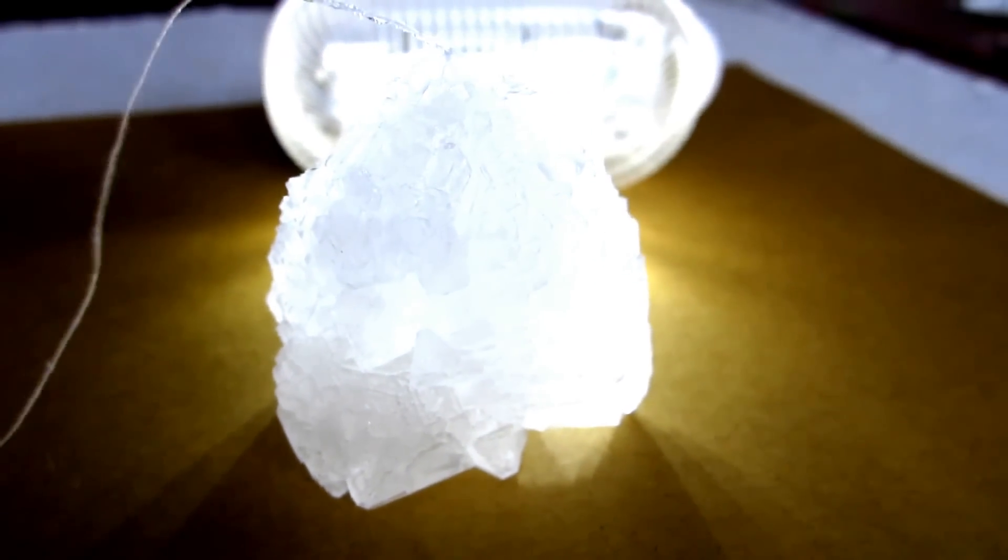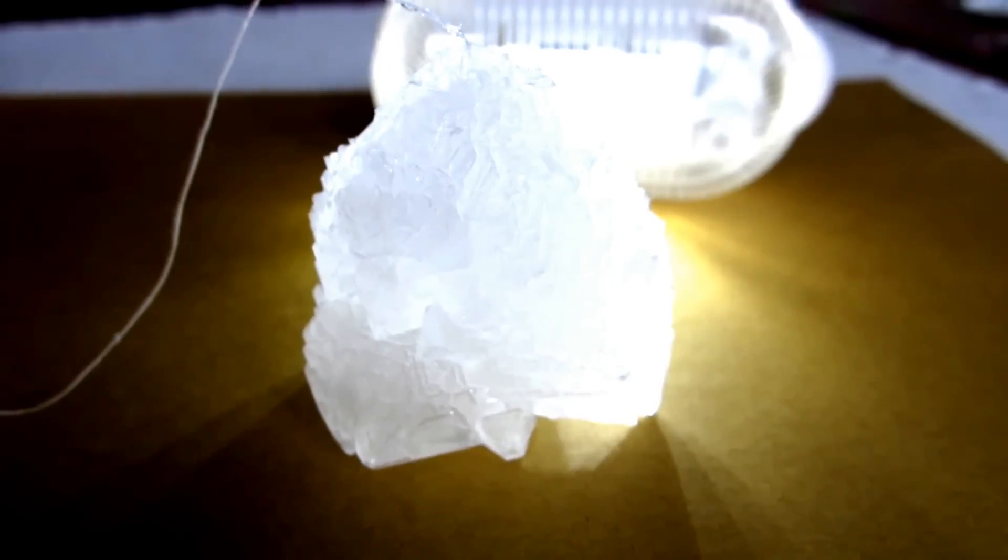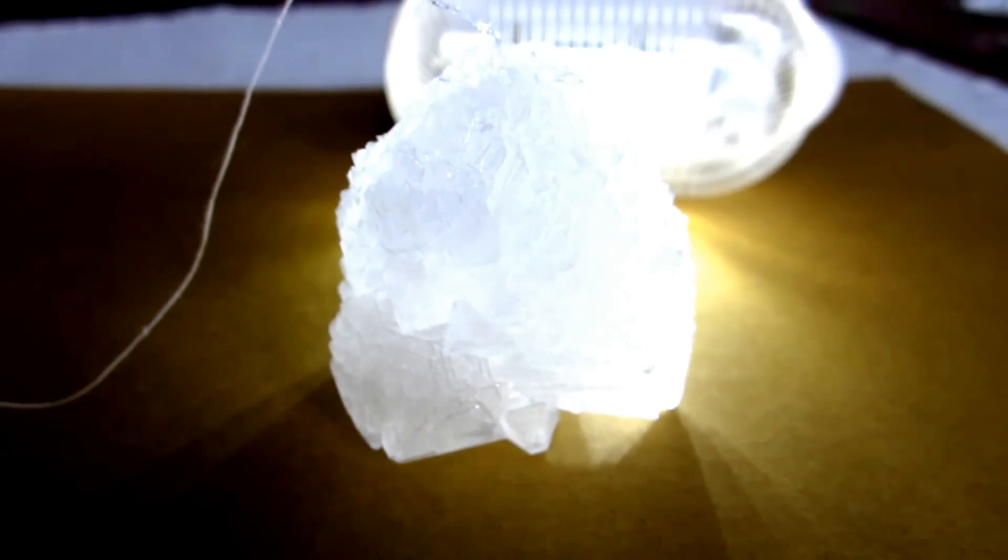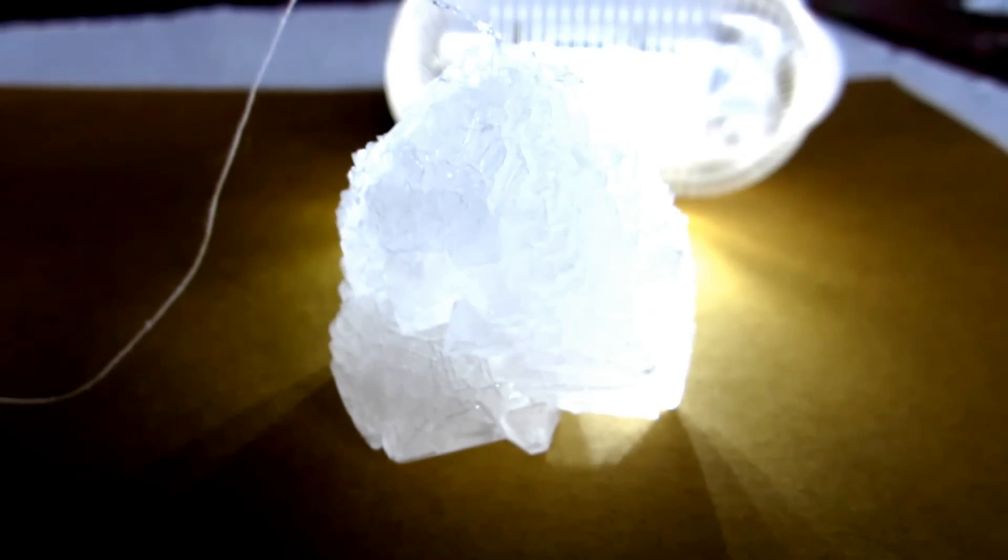To make a larger crystal, you can use this as seed crystal and heat the solution again to allow all alum to dissolve. Repeat the steps we did and you can have a super large crystal. Try this at home and thanks for watching.